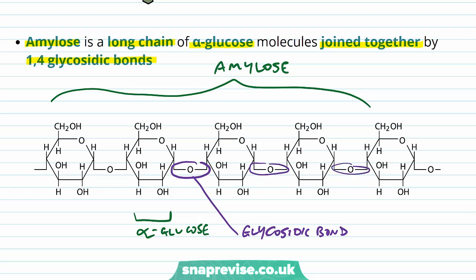The glycosidic bond acts as the bridge between two sugars. Remember that for every alpha glucose and most monosaccharides, we number the carbons from one to six. In this molecule, we always start from three o'clock.